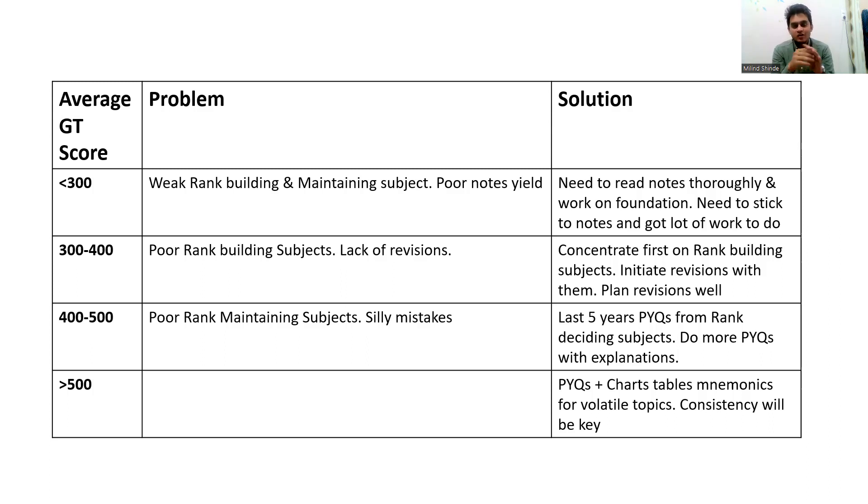Then students who are above 500—you will ask me, sir, why you have not included students above 600. I don't think a lot of students are there who are consistently scoring above 600. And even if they are, who are doing this, definitely they are working more on improving that score better than that. So I have just included till 500. Those who are at 500, again, you are also doing a lot of silly mistakes and you are doing mistakes in volatile topics. So I'll say you also concentrate on previous year questions. Also do a lot of charts, a lot of mnemonics of volatile topics. And for you, the consistency will be key because don't be happy that you are scoring 500. What I have quoted here is not a single GT score.